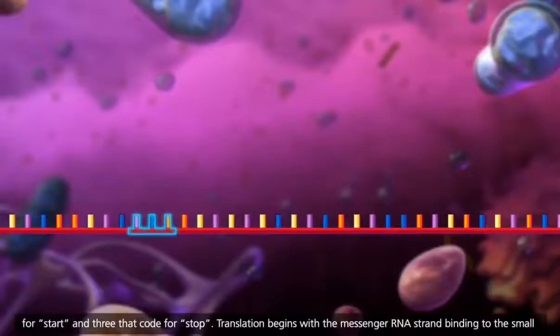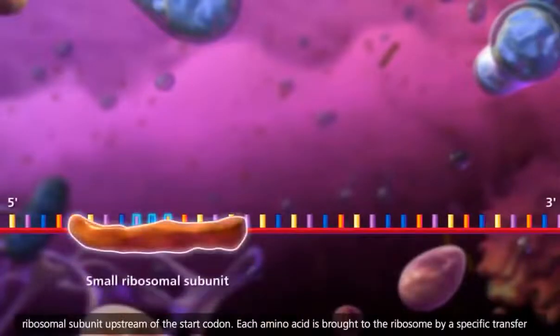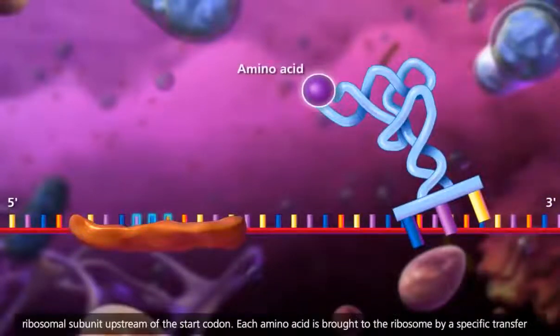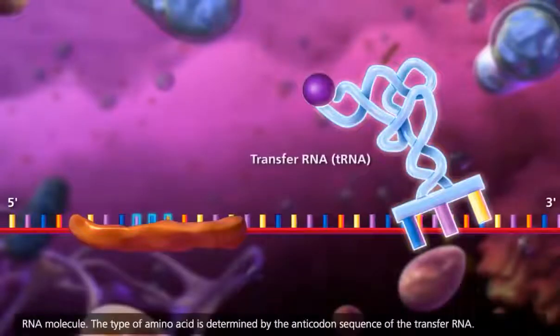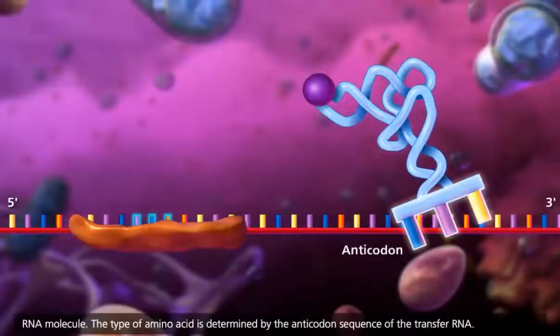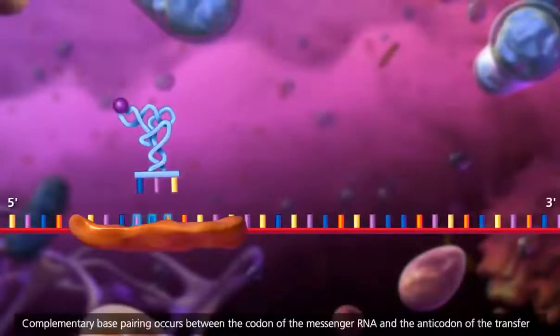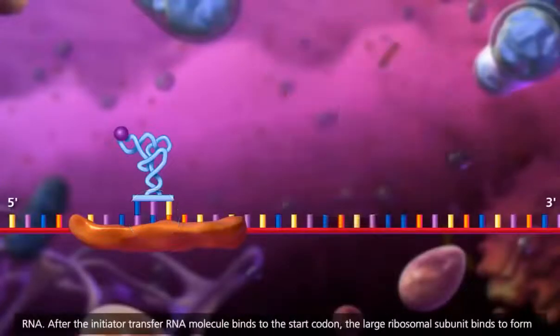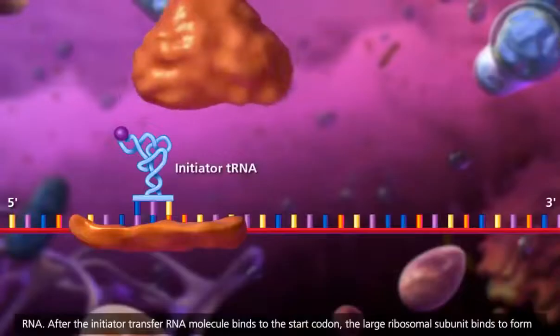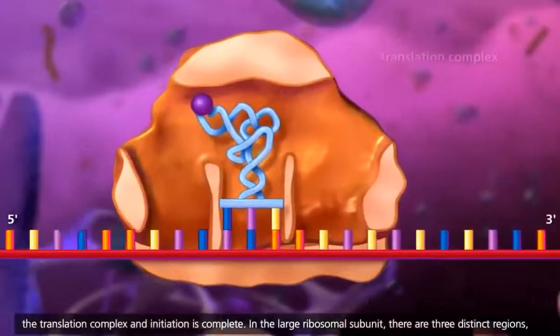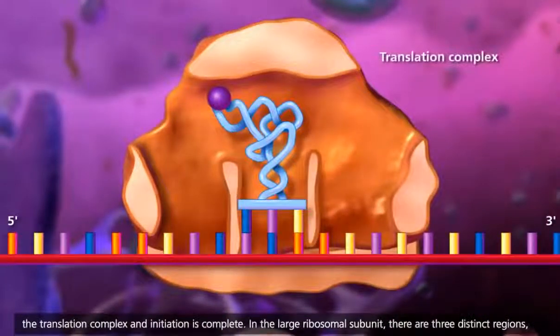Translation begins with the messenger RNA strand binding to the small ribosomal subunit upstream of the start codon. Each amino acid is brought to the ribosome by a specific transfer RNA molecule. The type of amino acid is determined by the anticodon sequence of the transfer RNA. Complementary base pairing occurs between the codon of the messenger RNA and the anticodon of the transfer RNA. After the initiator transfer RNA molecule binds to the start codon, the large ribosomal subunit binds to form the translation complex and initiation is complete.